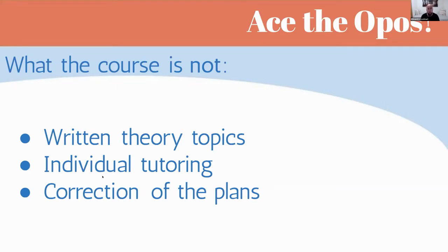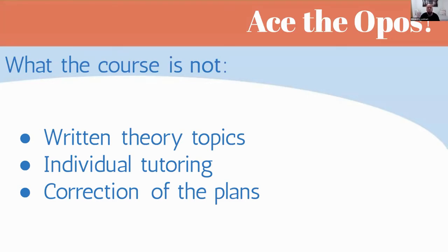It won't be individual tutoring — just guidance. It's a 50-hour course, so there's no time for individual tutoring. It's more for giving you support, solving doubts about the process, helping you structure your time. The price is also not as expensive as normal OPOs training courses. We won't be correcting the plans, but we will check them with you. There will be a moment in the course where in Zoom breakout rooms you individually show a trainer your plan and the trainer gives you feedback, but it won't be a thorough correction because of the course length and price.